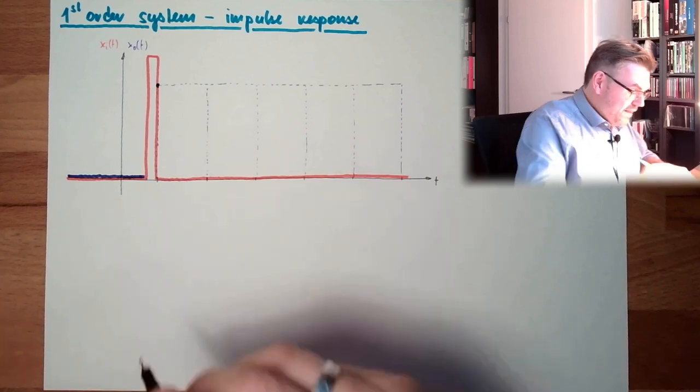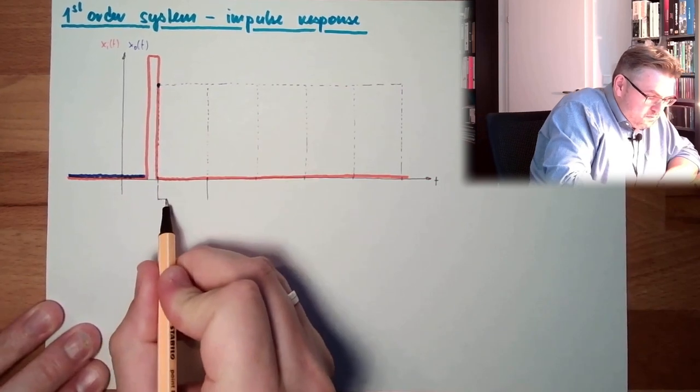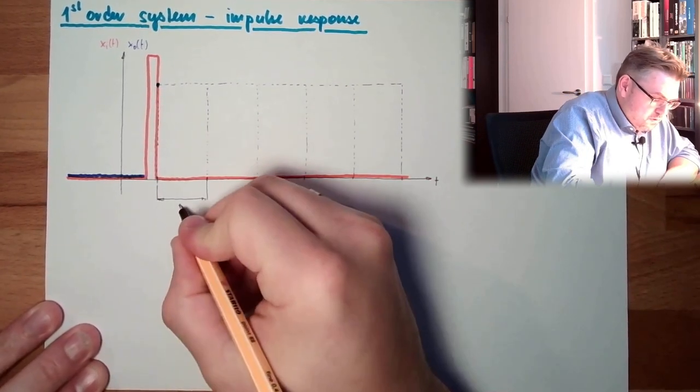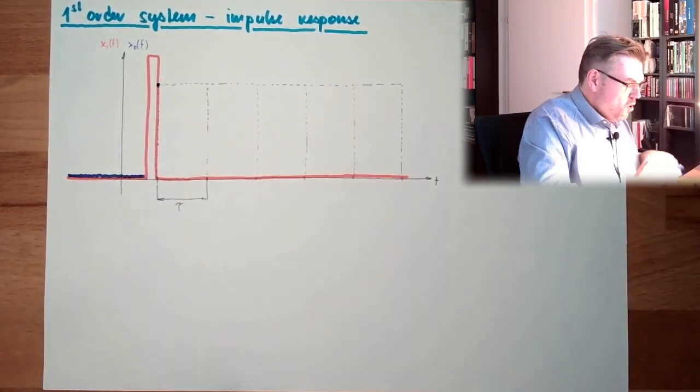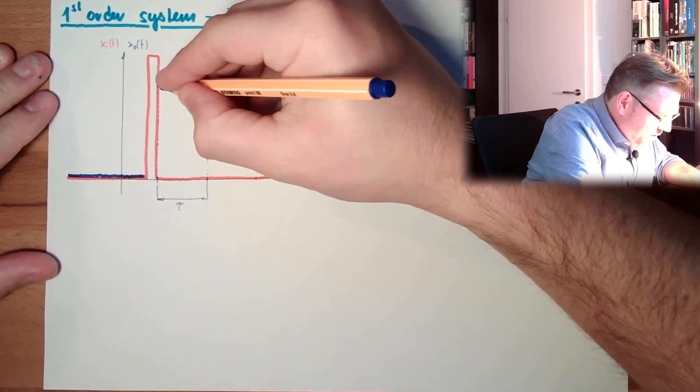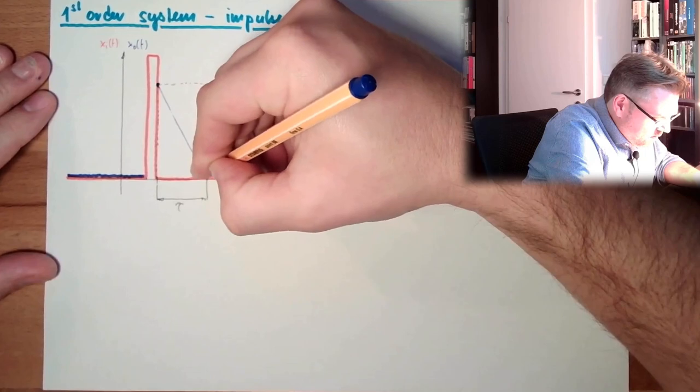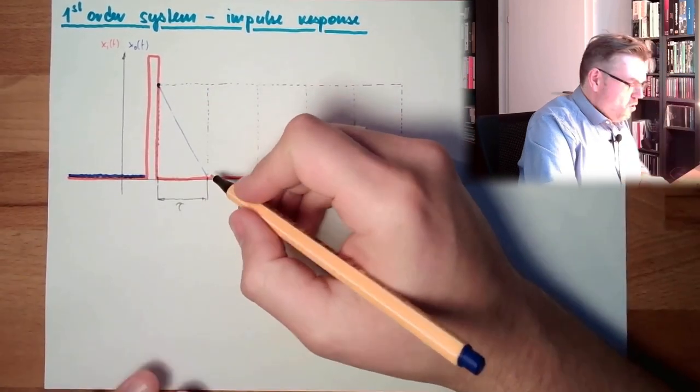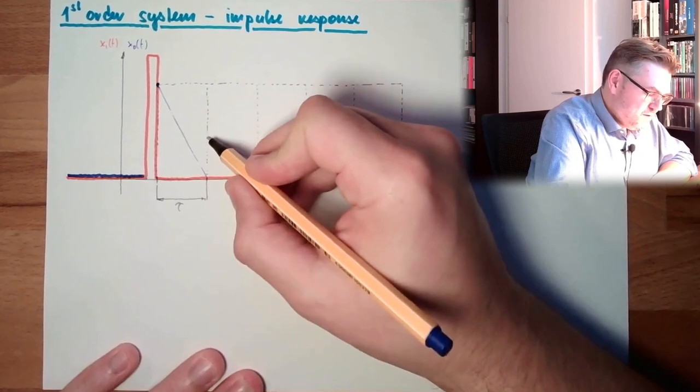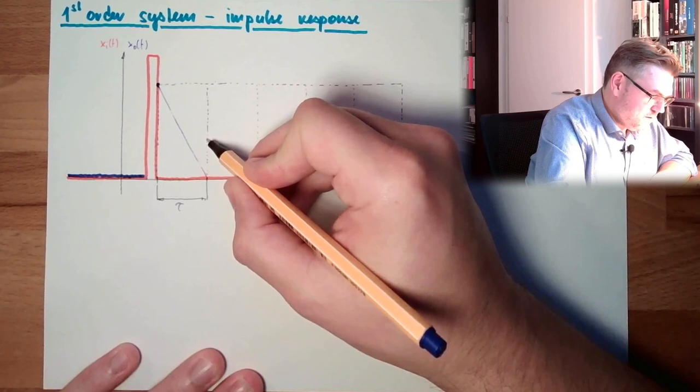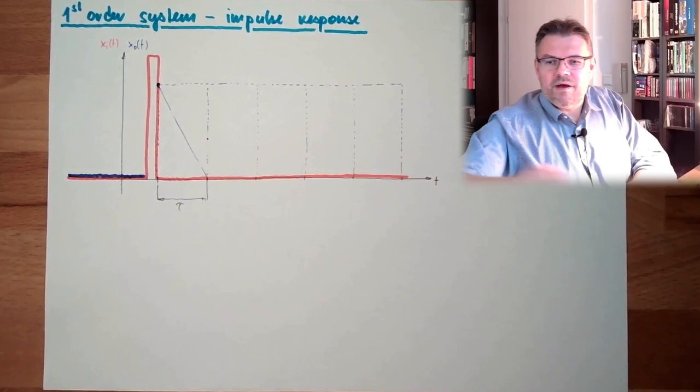So there is somewhere a time constant, and the disappearing of this reaction will do with the beginning steepness of this. Here we will reach again 63 percent. We've covered this.